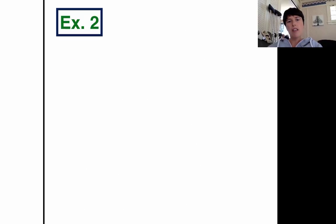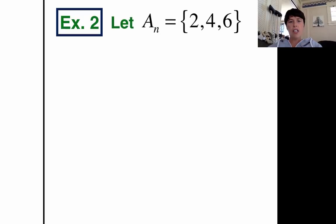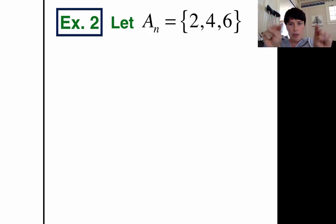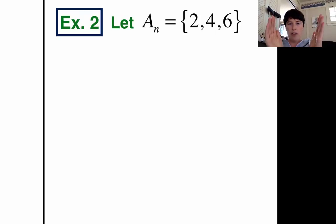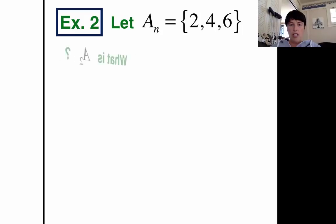We're going to look at the sequence first. Let a sub n equal 2, 4, 6. Now I'm using some new notation here. I put a brace around this list of numbers. 2, 4, 6 is our sequence. And we often use this. It looks like parentheses, but you'll see it kind of goes out and then in. That's called a brace. And usually with sequences, we like to put a brace around them.